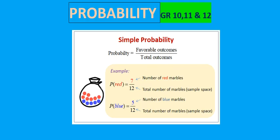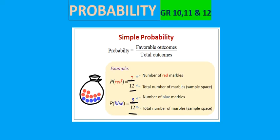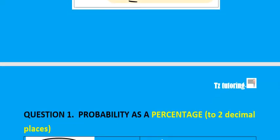If we've got a bag full of marbles and the total of all the marbles is 12, the total comes at the bottom. What is the probability that you will find a red marble? There are seven red marbles out of a total of 12, and there are five blue marbles out of a total of 12.